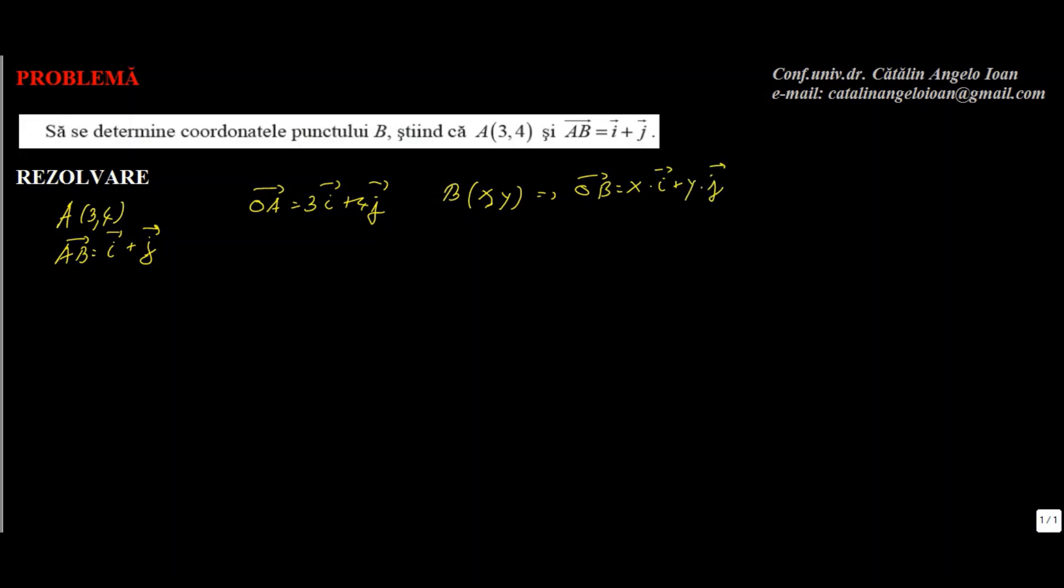Ce înseamnă vectorul AB? AB prin definiție este egal cu OB minus OA. Rezultă că AB, care este i plus j, egal cu OB, adică x ori i plus y ori j, minus OA, adică minus 3i minus 4j. Deci i plus j egal cu x ori i minus 3i face x minus 3 tot ori i, plus y ori j minus 4j, deci plus y minus 4 ori j.